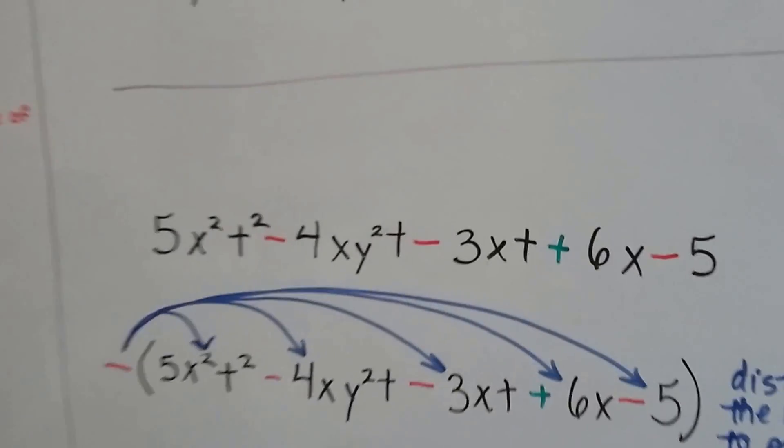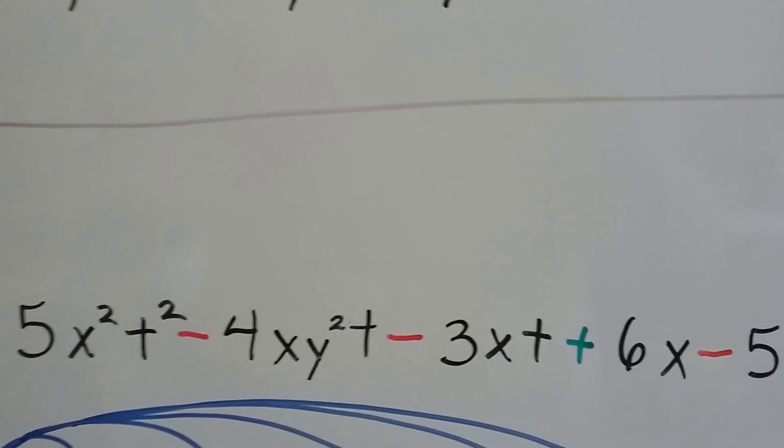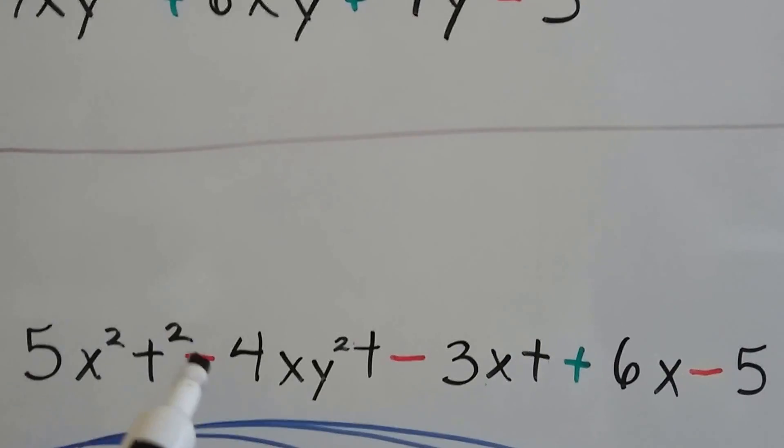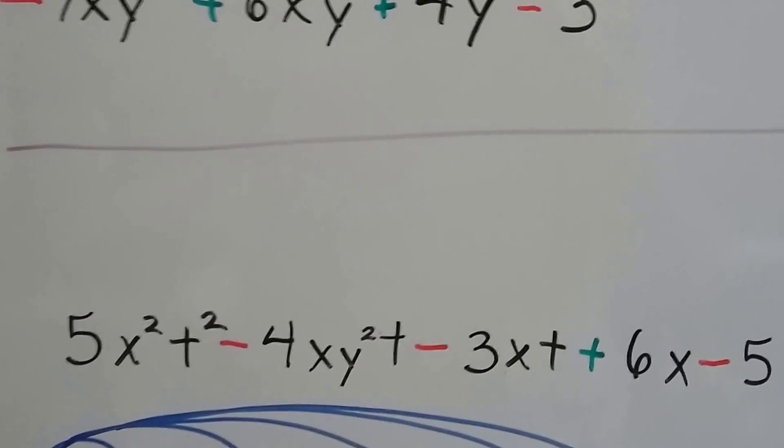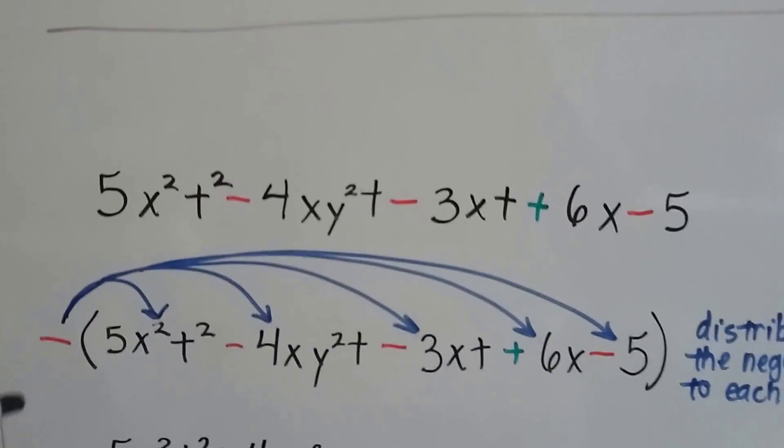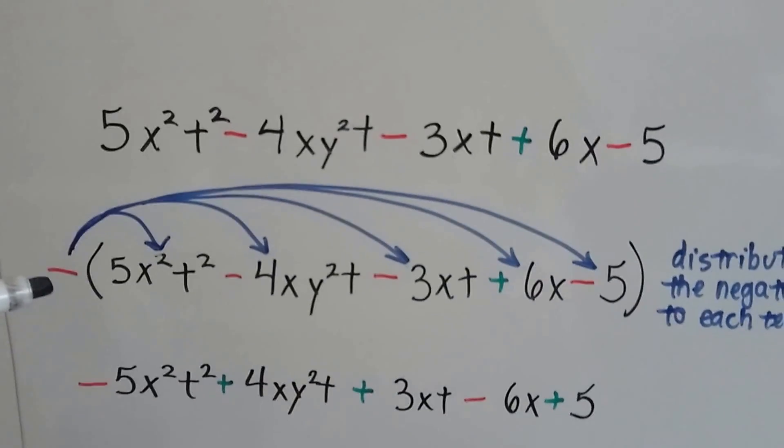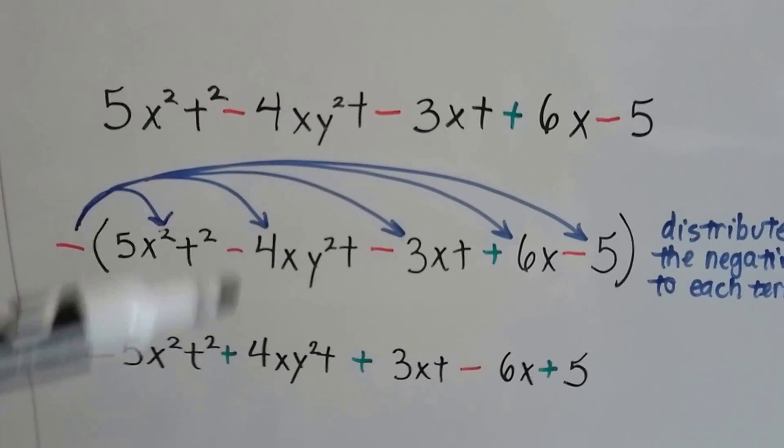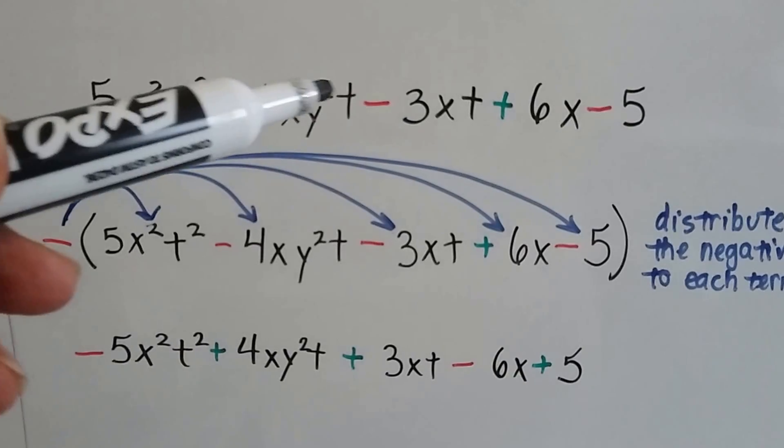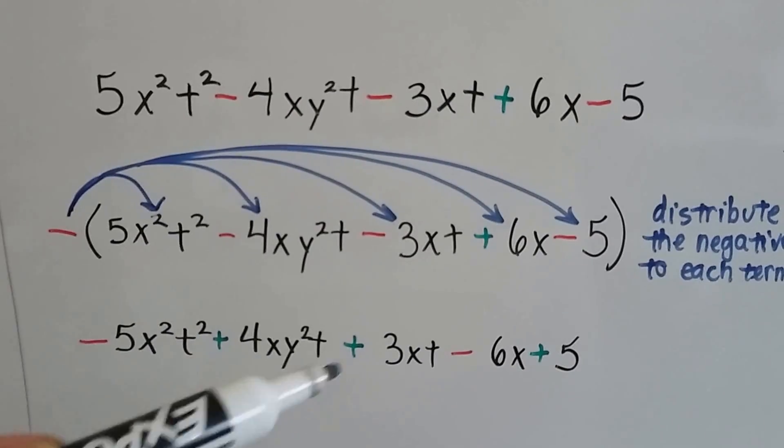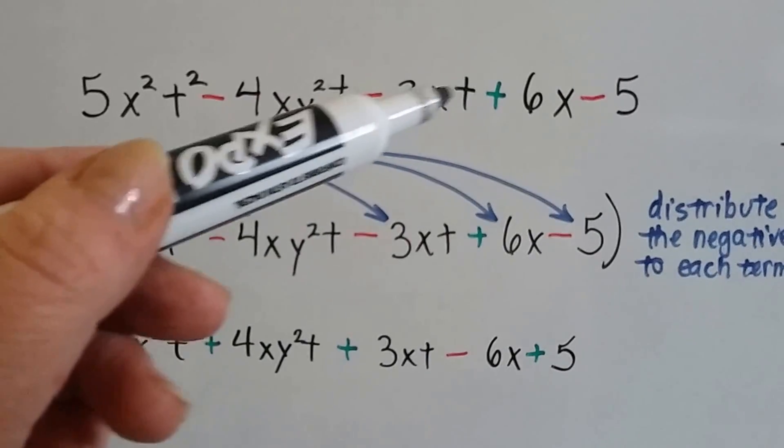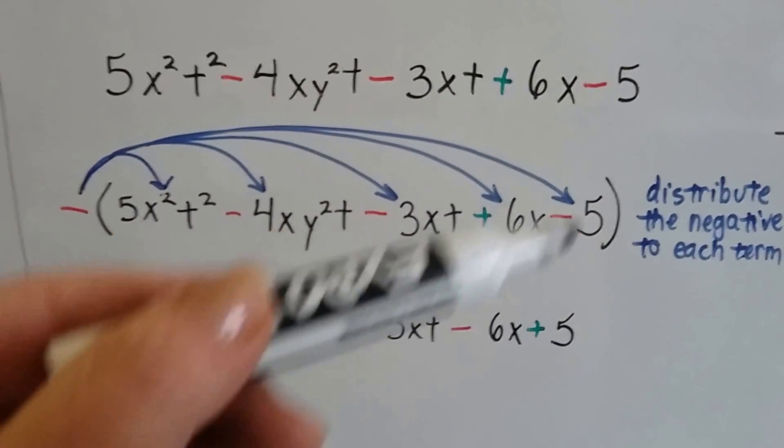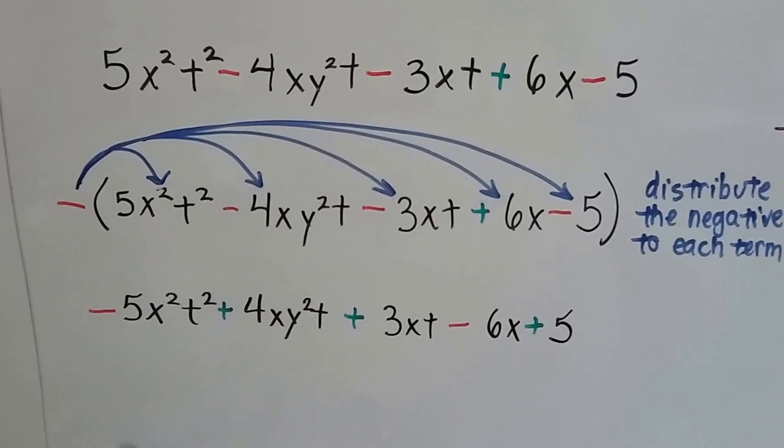How about this one? We could just do it without doing any math. We could just make that a plus, that a plus, that a minus, and that a plus. Just switch the signs. By multiplying it by its negative, this becomes negative 5x squared t squared. Now that negative 4xy squared t becomes positive. This negative 3xt becomes positive 3xt. This positive 6x becomes negative 6x, and that negative 5 becomes positive 5. Two negatives make a positive, so that's positive 5.